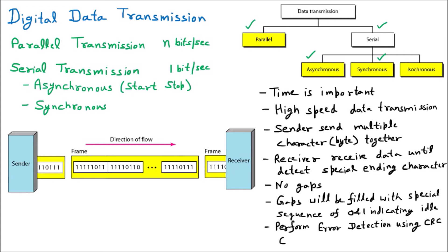CRC stands for Cyclic Redundancy Check. Since everything is transmitted as bits — 0s and 1s — there are various mechanisms for error detection and correction, such as Hamming code and CRC. Using the CRC mechanism, errors are detected, reported, and corrected. All of these things are done in synchronous communication to ensure reliable data delivery.